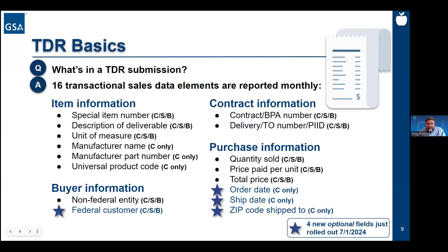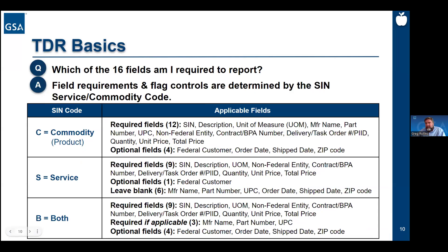Certainly folks absorb information in different ways, so this slide really contains similar information to the previous slide, visualized differently. We wanted to make sure we slice it both ways so folks have the information. All 12 of the base fields are required for product SINs, whereas services don't need to report manufacturer name, part number, or UPC. Both SINs only need to report those fields for products. We're trying to give you this information in different ways, and hopefully this is a useful, different way to visualize this information.